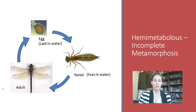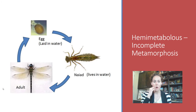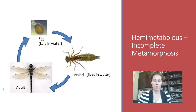Some hemimetabolous insects lay their eggs in water, but we don't call their immatures nymphs — we call them nyads. So if you hear the term nyad, it refers to something that lays its eggs in the water and whose immatures develop there. These are really dragonflies and damselflies, mayflies and stoneflies. There are very few that actually do that, but a nyad is an aquatic immature.